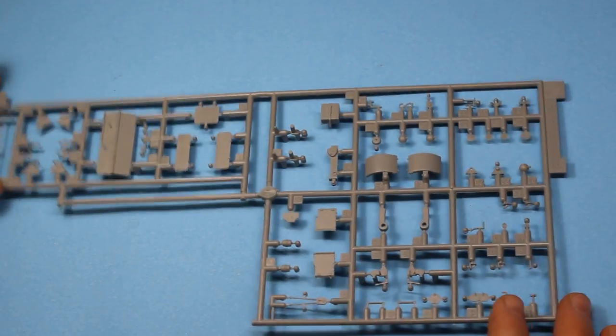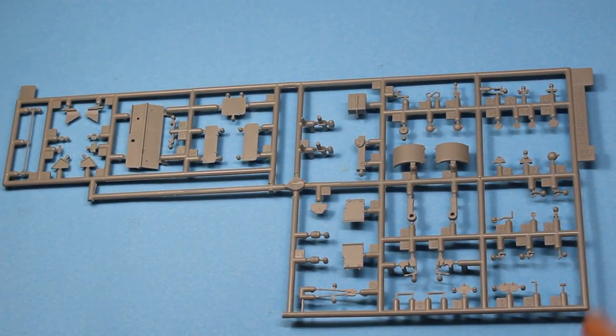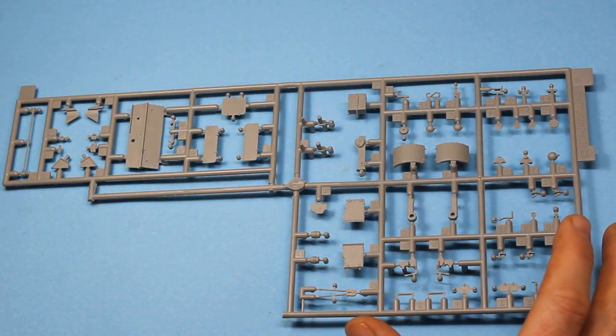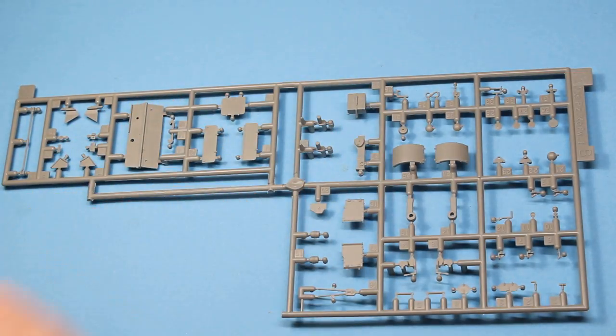Then we've got sprue B. This one is an older part I'm sure and this has parts for the front fender and a few small fixings for the superstructure. Not sure if very much of this is used at all in this particular kit.